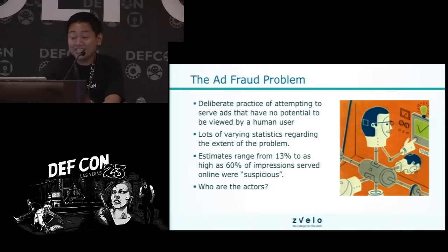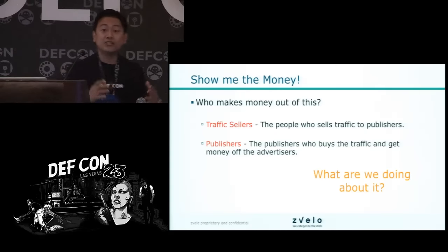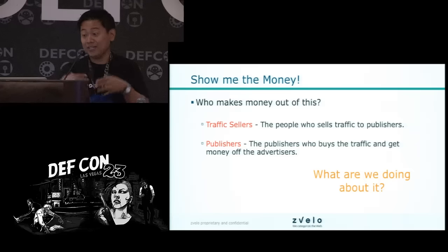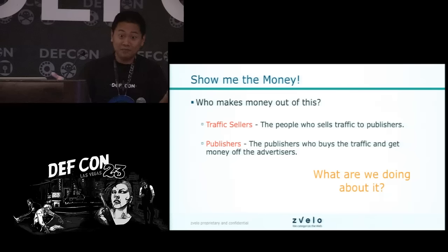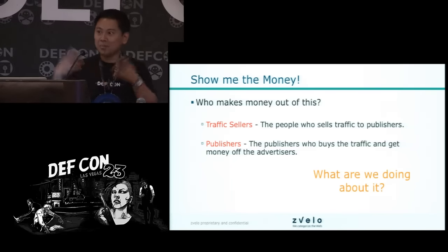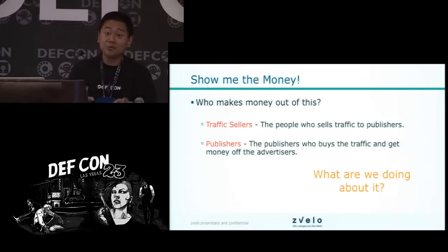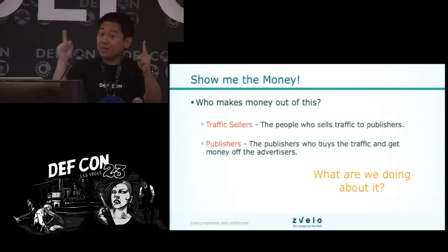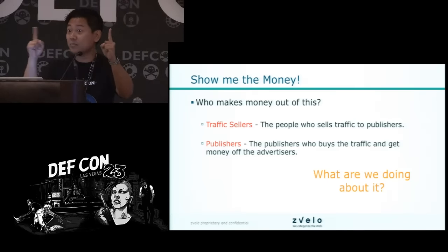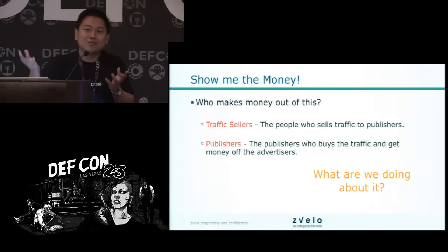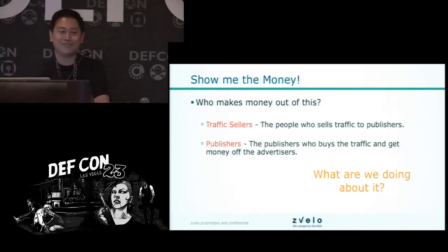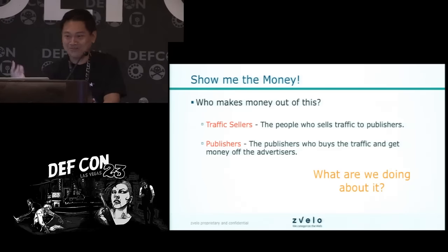Who are the actors actually making money out of this? Obviously, the ones who sell traffic — they make money generating traffic. And who makes money in advertising? It's the publishers — the blogs, the big websites. They purchase traffic, there's a cost there, and they get money from the advertisers, so they make money off the spread. In maybe two weeks I'm releasing another paper called The Economics of Ad Fraud, so just wait for it.